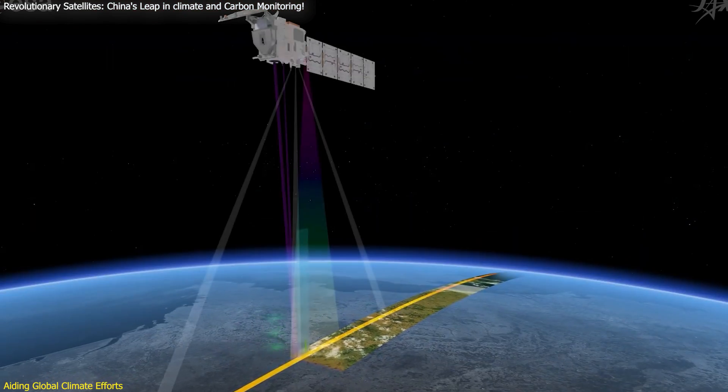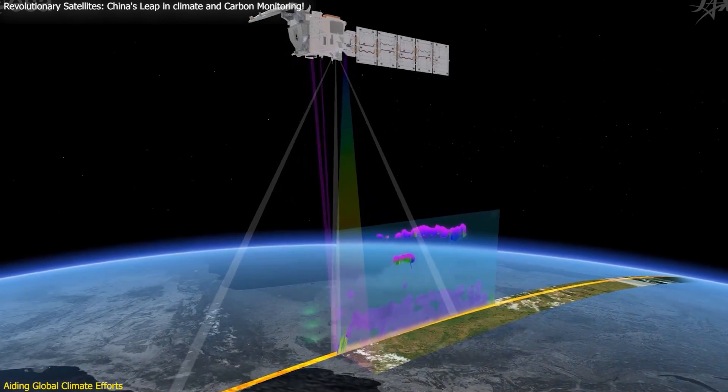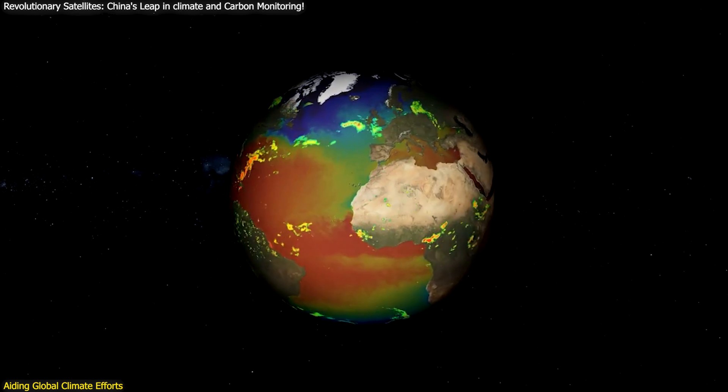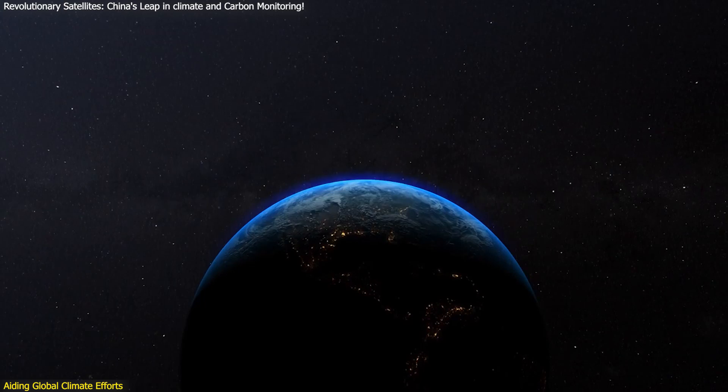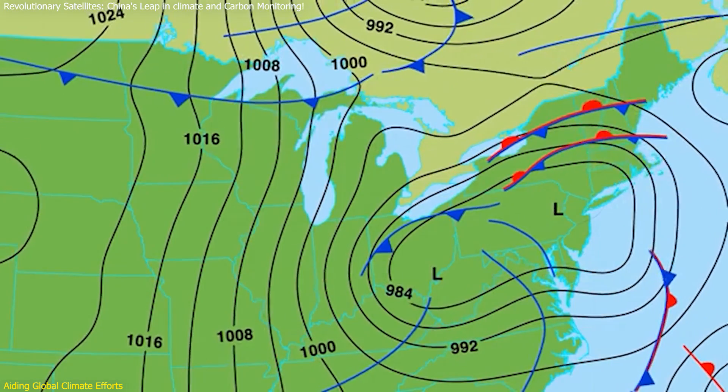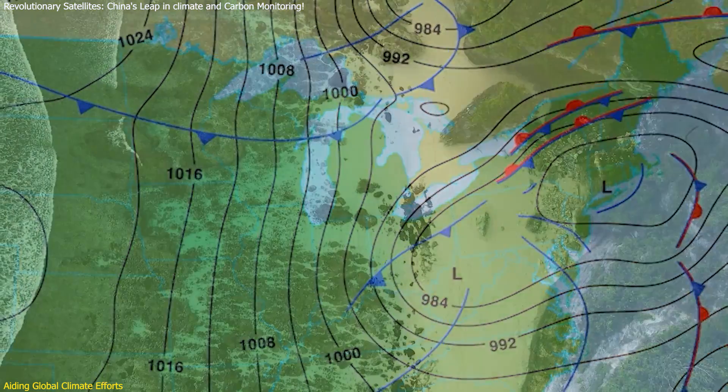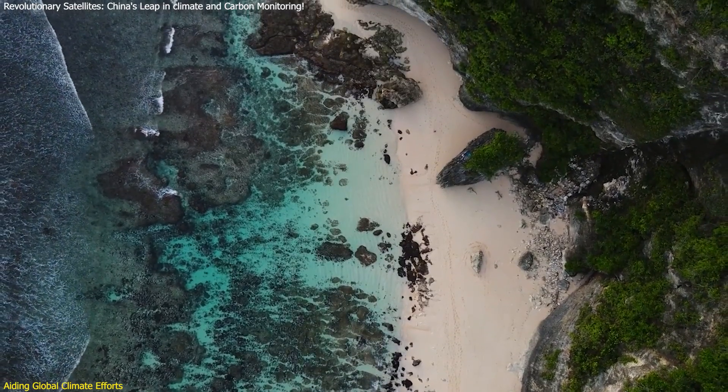Additionally, the data from these satellites can help track the progress of international climate agreements, such as the Paris Agreement, by providing transparent and verifiable data on emissions reductions. This ensures accountability and encourages countries to meet their climate commitments. The availability of precise, real-time data helps nations to assess their current standings accurately, identify areas needing improvement, and implement necessary changes more effectively.